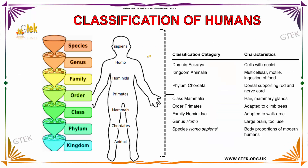Now we are going to see about the classification of humans. The species is Homo sapiens, genus is Homo, family is Hominins, order is primates, class is mammals, the phylum is chordates, and the kingdom is animals. These are the classification of humans.